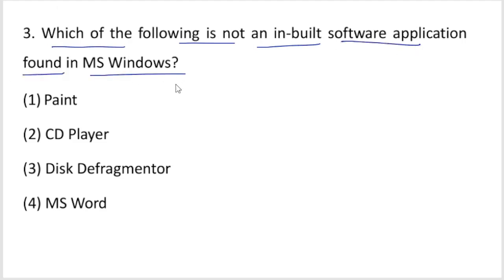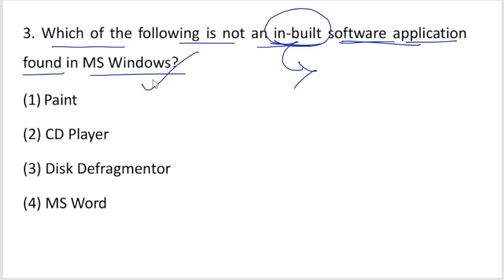In Microsoft Windows operating system, the following are inbuilt software applications. Inbuilt means pre-installed — Microsoft Windows installs them by default. The options are: Paint, CD Player, Disk Defragmenter, and MS Word. Which option is your right answer?